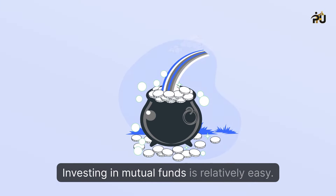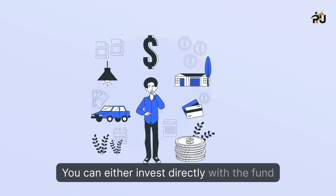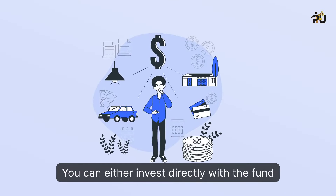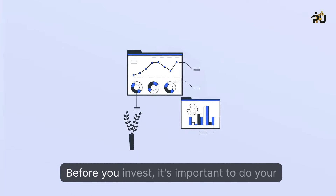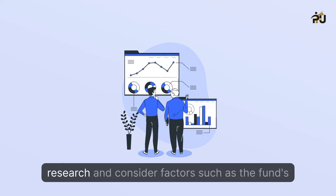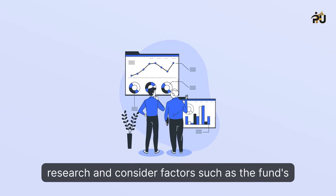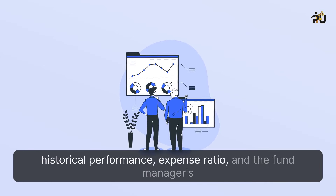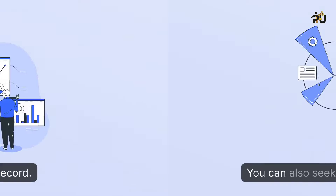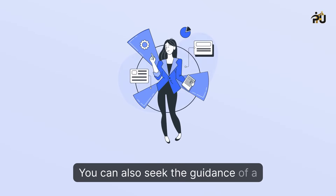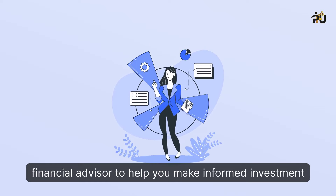How to invest in mutual funds. Investing in mutual funds is relatively easy. You can either invest directly with the fund company or through a brokerage account. Before you invest, it's important to do your research and consider factors such as the fund's historical performance, expense ratio, and the fund manager's track record. You can also seek the guidance of a financial advisor to help you make informed investment decisions.